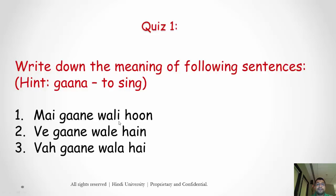The first sentence is 'main gaane wali hoon' — just to give you a hint, 'gaana' in Hindi means to sing. The second sentence is 'hum gaane wale hain,' and the third one is 'woh gaane wala hai.' Write down their meanings in your native language or in English. Let me know what you think of this lecture and I'll see you tomorrow.